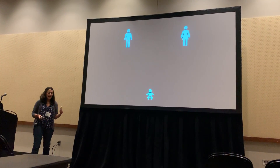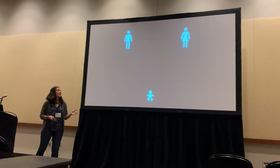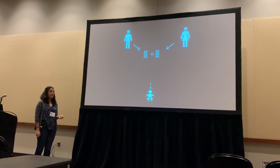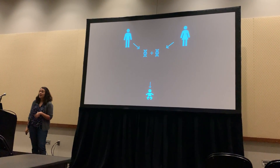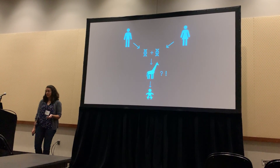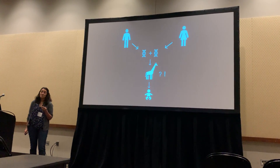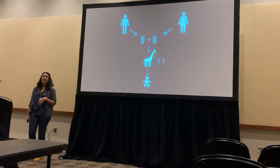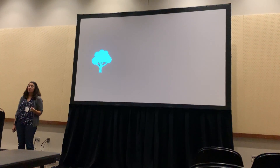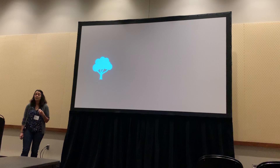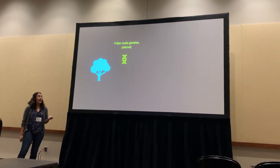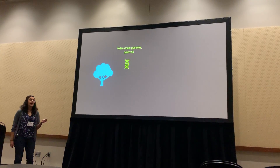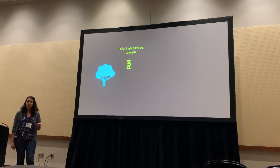To start off, I'd like you to imagine the following scenario. Imagine that the movement of your genetic material and your successful reproduction relies almost entirely on a completely different species. This is actually the reality for over 85% of wild plant species that are outcrossing, meaning that their pollen, which is made up of male gametes that are paternally inherited, have to be moved to a flower of a different individual.